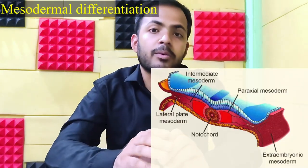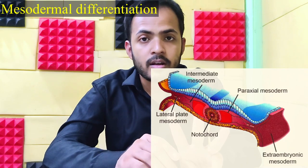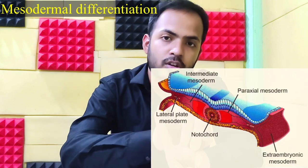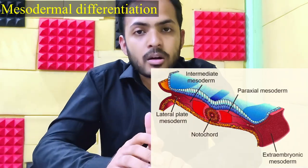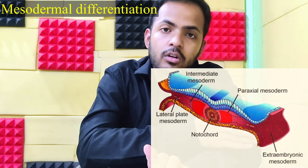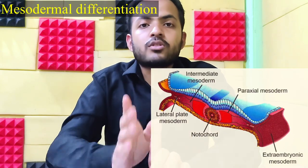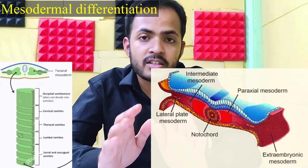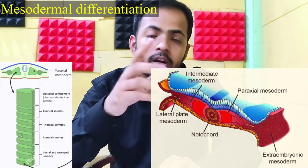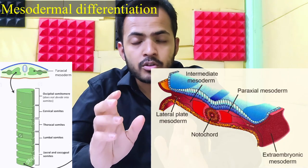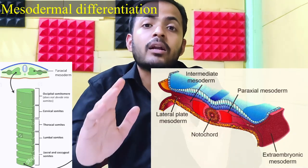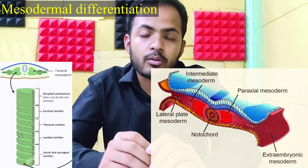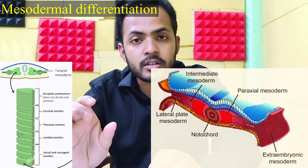The intraembryonic mesoderm divides into three parts: paraxial mesoderm, intermediate mesoderm, and lateral plate mesoderm. Paraxial mesoderm extends from either part of the notochord to the intermediate mesoderm, up to the prechordal plate. This paraxial mesoderm condenses and forms a hole-like mass of multipotent cells; this structure is called somitomeres, which ultimately form somites — we'll discuss somites later.